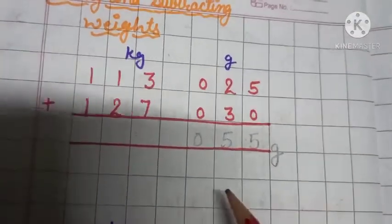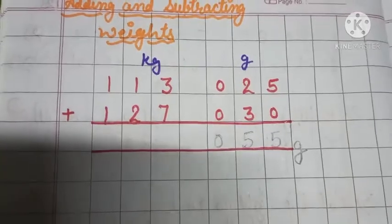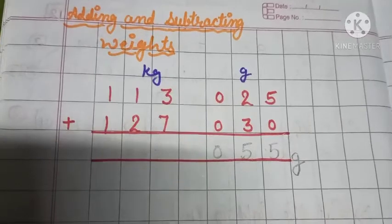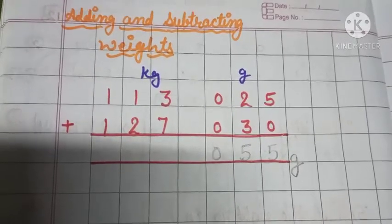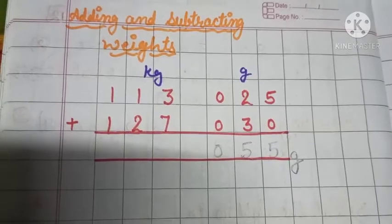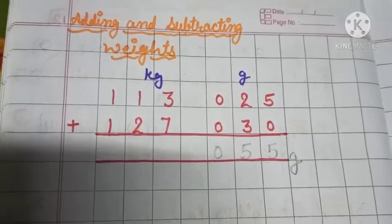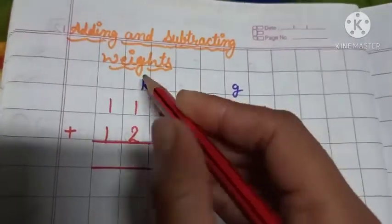Now, we have to add the values of kilogram. We need to add 7 and 3. Keep the 7 in your mind and 3 in your finger boxes. When we add, we get 10. 10 is a 2 digit number. So write 0 here and 1 here.